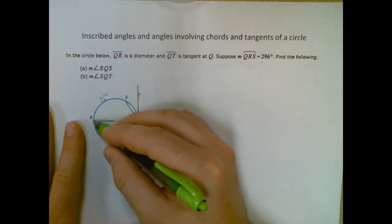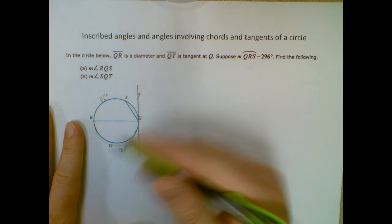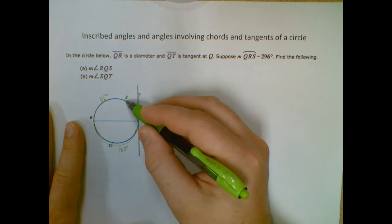So now this is great because it's an intercepted arc of this angle, which since the vertex isn't in the center, it's on the outside, it's an inscribed angle, which means it's going to be half the length of this arc.